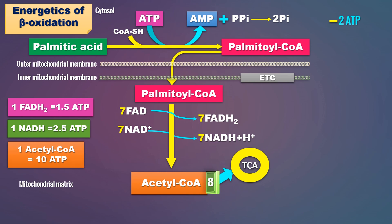Note that older textbooks mention 1 FADH2 equals 2 ATP and 1 NADH equals 3 ATP, but according to the latest calculations we use 1 FADH2 equal to 1.5 ATP after oxidative phosphorylation, 1 NADH equal to 2.5 ATP, and accordingly 1 acetyl-CoA generates 10 ATP.